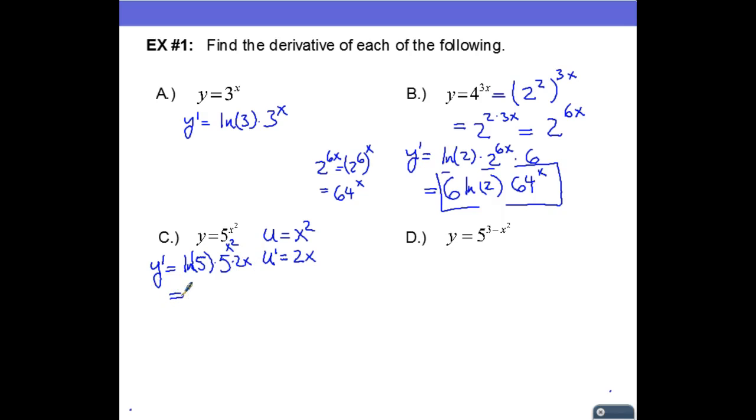So we can rewrite this and we have 2x times the natural log of five times five to the x squared. That is going to be our derivative.